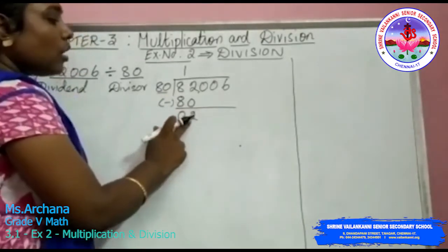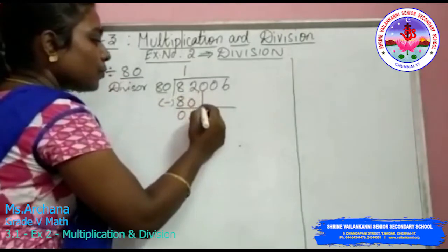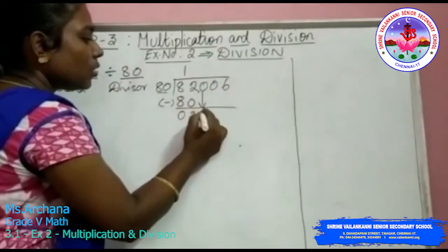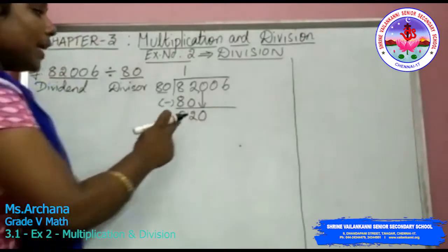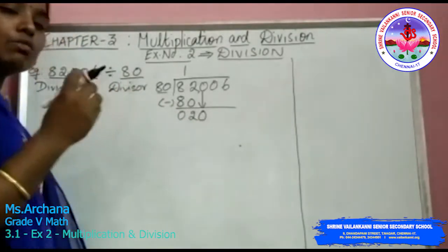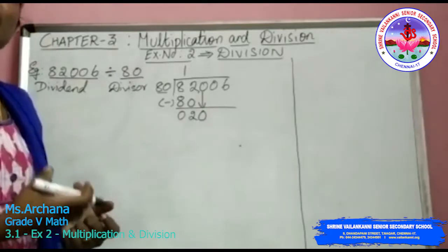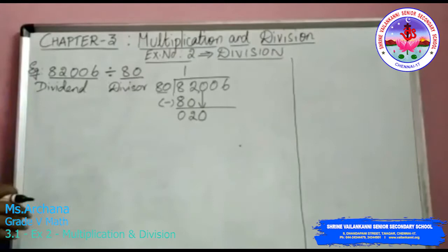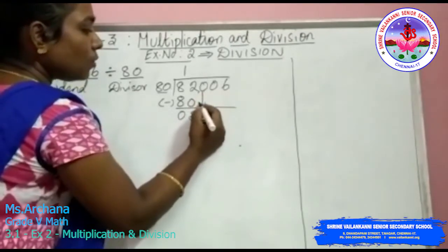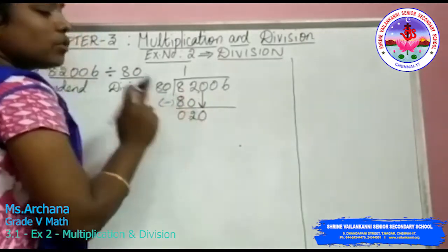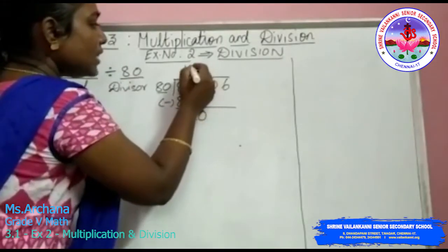So now you have some more digits in the dividend, so you should bring them down one by one. First, I am bringing this 0 down. Now this 2 has become 20. So now you should check whether 20 will come in the 80 table. This 20 is smaller than 80, so we can't do division — 20 will not come in the 80 table, because 80 ones are 80. In that case, when you can't do division with the value you brought down, you are supposed to give a 0 in the quotient.